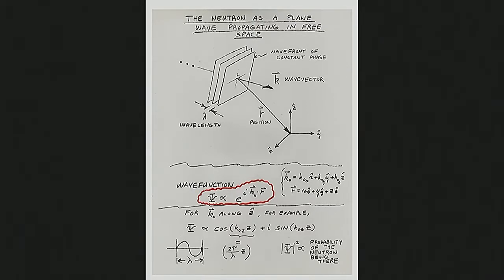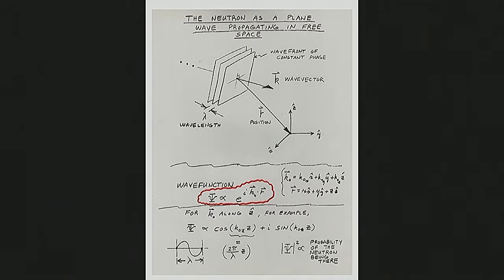The neutron starts out at a reactor as a constituent of the nucleus in uranium-235, gets fissioned and then moderated, comes in and reflects from the sample, and gets detected — captured, say, by a helium-3 nucleus, and again becomes part of a nucleus, an alpha particle. So from beginning to end, it's a particle. But in between, its scattering is determined entirely by its wave-like characteristics described by its wave function.